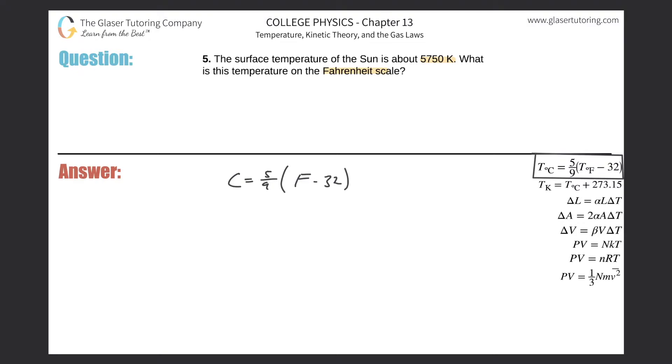So my first goal, solve this thing for F. So basically multiply this side by nine over five to get rid of this fraction. And then the same thing over here, this side would get multiplied by nine over five.